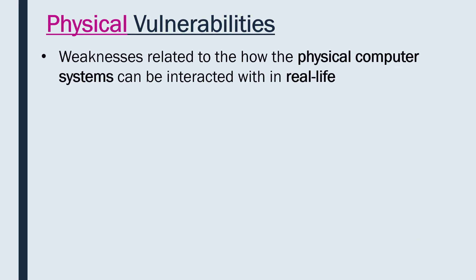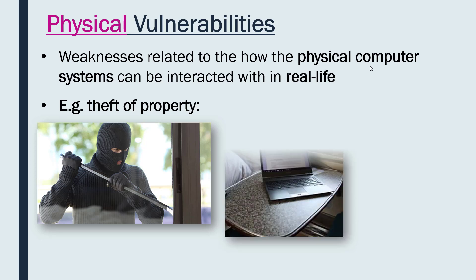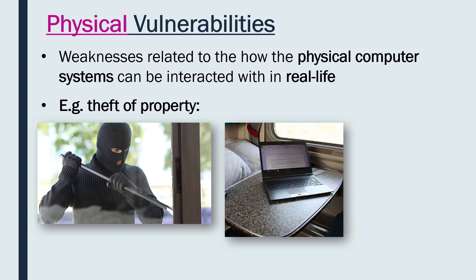Our second category is physical vulnerabilities — weaknesses related to how physical computer systems can be interacted with in real life. Going from environmental vulnerabilities being outside our building, these are really inside our building: how people can physically touch our computer systems. One good example is theft of property. A burglar could come in and steal all of your storage devices, which may contain lots of personal information. They may use social engineering techniques such as tailgating or pretexting to get inside. Theft can also come from an employee mistake — employees are often the biggest vulnerability, doing things like leaving a laptop on a train.